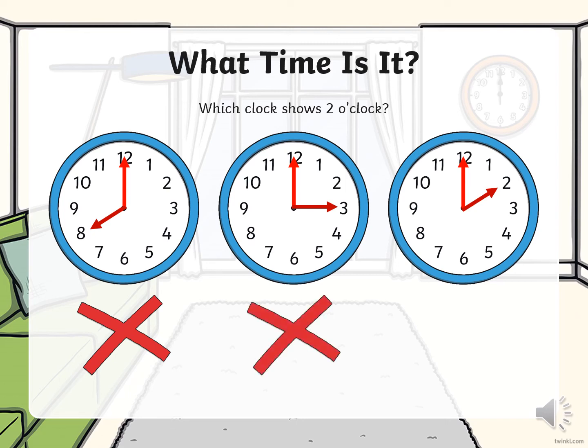Now let's look at the last clock — this surely has to be it, but let's just make sure. The long arm is pointing to the 12 which says o'clock, and the short arm is pointing to the 2. So this clock says 2 o'clock, and that's the one we wanted.